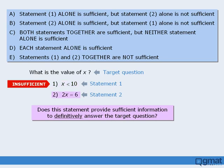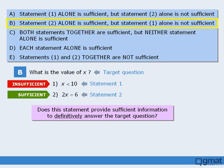Now consider statement 2, which tells us that 2x equals 6. Does this statement provide sufficient information to answer the target question? The answer is yes. If we know that 2x equals 6, then x must equal 3, which means we can definitely determine the value of x. Since statement 2 does provide sufficient information, we say it is sufficient. So statement 1 is not sufficient but statement 2 is, meaning the answer to our question is B — statement 2 alone is sufficient, but statement 1 alone is not.